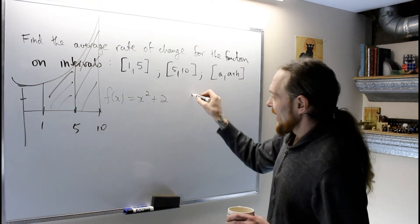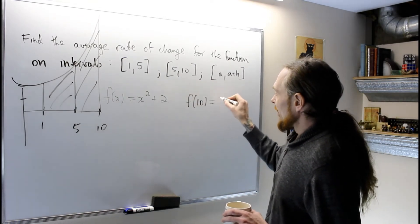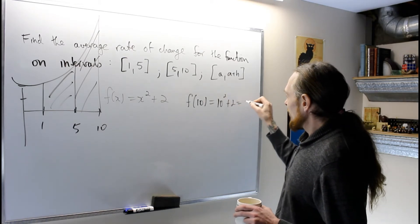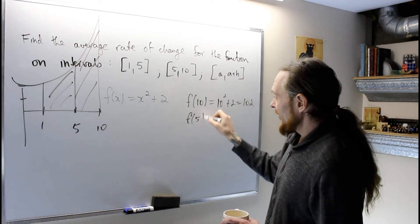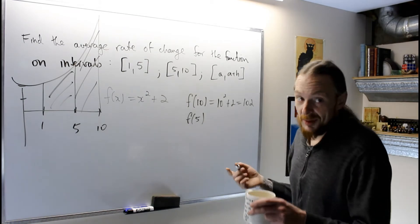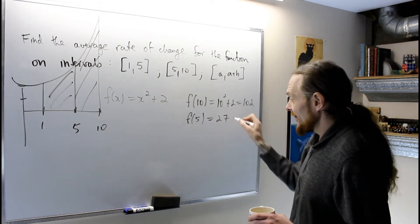What we're going to do now is, again, I need f(10), which is 10² + 2, which is 102. And I need f(5), which I already calculated—it was 27. This is the first rule in math: if you calculate something once, be lazy, why would you calculate it again?